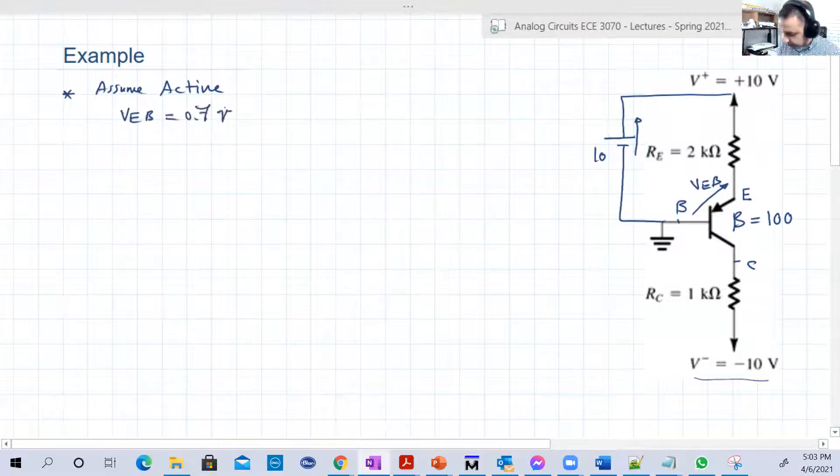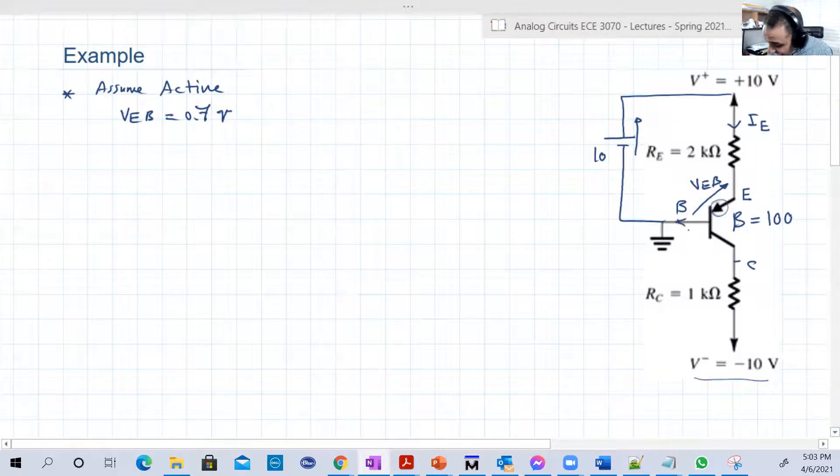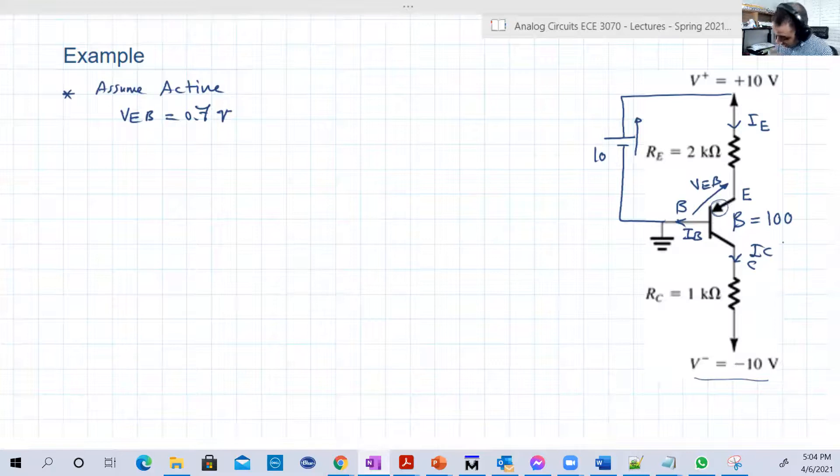So we're going to assume that VEB is 0.7 volts. This is IE. It's a good practice here to put the current before anything because while going into the solution you might get confused with the NPN and assume an opposite direction for the current. So it's important to start with the current directions. So IE is going into, and remember you have here a clue because of this small arrow here in the symbol. IB is going out of the base, IC is going out of the collector.